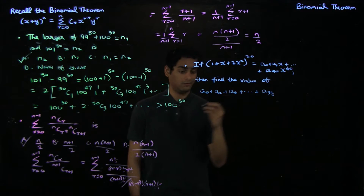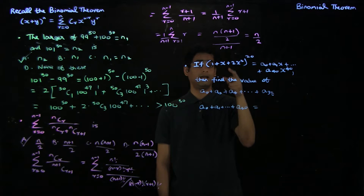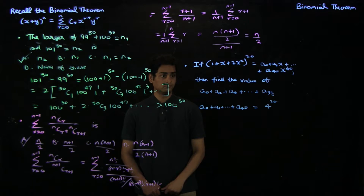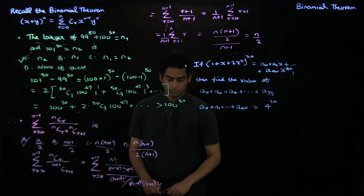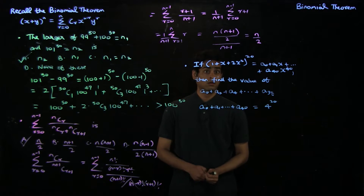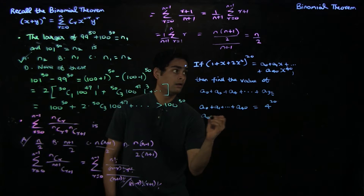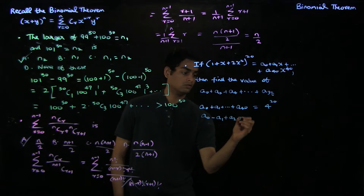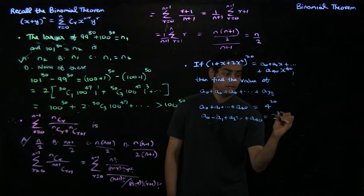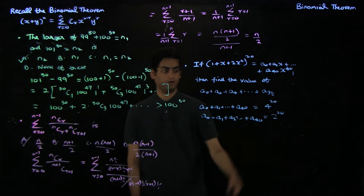When you're given such a problem where you're asked to find a subset of coefficients, you have to try plugging in suitable values of x. The way to get the sum of all the coefficients is to plug in x equals 1, giving you a0 plus a1 and so on to a40. That is 4 to the power of 20. Now, plugging in x equals minus 1 gives you a0 minus a1 plus a2 and so on till plus a40 equals 2 to the power of 20, alternating signs between the even and odd coefficients.